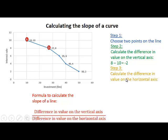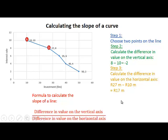Step 3: we then calculate the difference in value on the horizontal axis. At point A, investment on the horizontal axis is 10 million, and at point B, investment is 27 million. So it increases by 17 million. The value at B minus the value at A gives us the difference, which is 17 million.